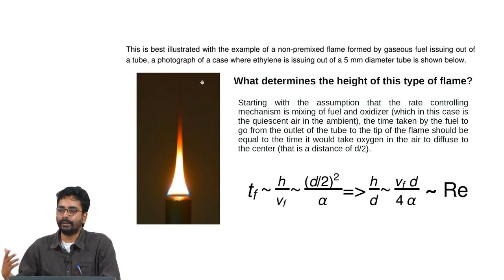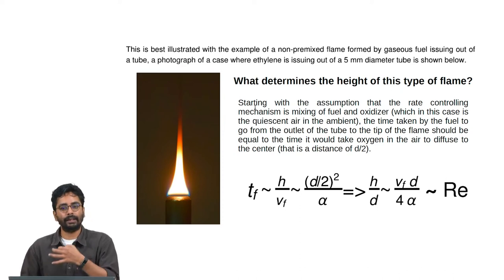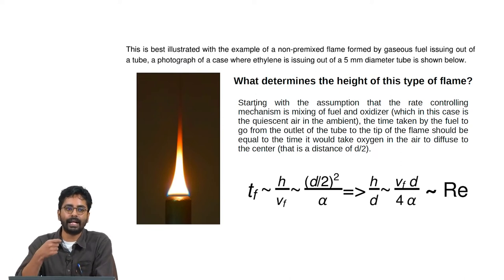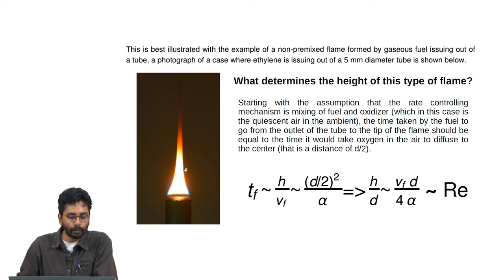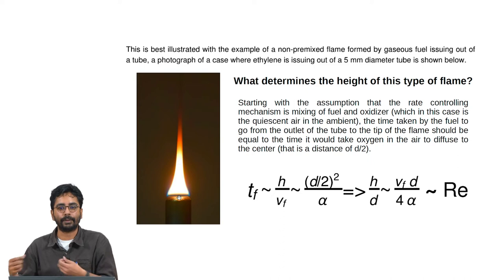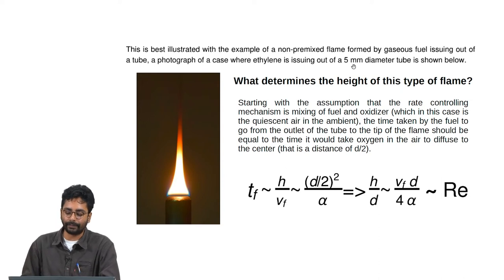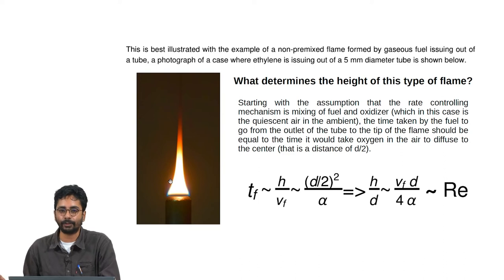This is best illustrated with the example of a non-premixed flame formed by a gaseous fuel issuing out of a tube — similar to the premixed flame arrangement, except here pure ethylene is coming out of the tube. There is only fuel coming out; it burns by taking oxidizer from the surroundings. In the photograph shown, ethylene issues out of a 5 mm diameter tube forming a non-premixed, pure diffusion flame.